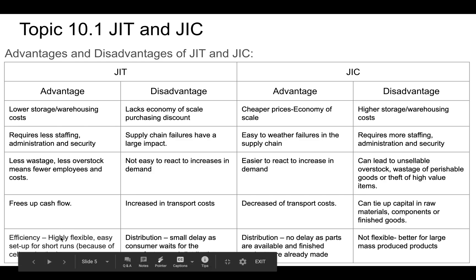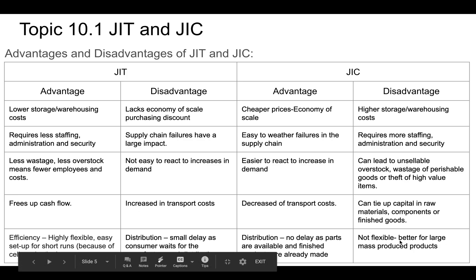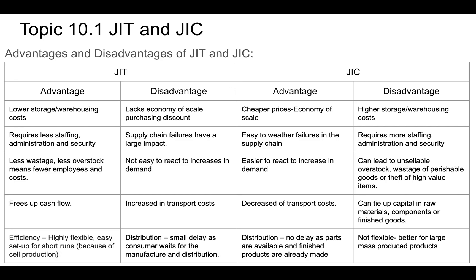An advantage of just-in-time is that it can be highly flexible — easy to set up and run short production runs of smaller amounts of product. Cell production supports this flexibility. Just-in-case is not flexible; it suits mass production of millions of identical items. Changing a mass production line is a major undertaking, as seen during COVID-19 when governments forced manufacturers to switch to producing ventilators, requiring a complete retooling of production lines.